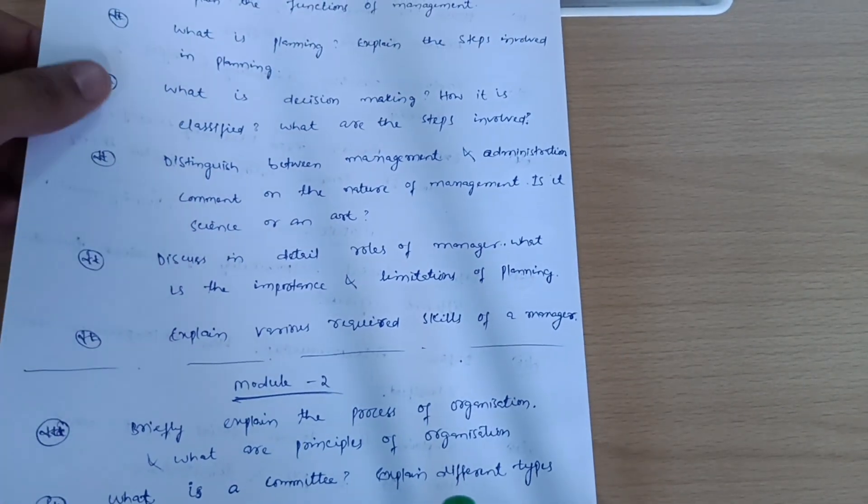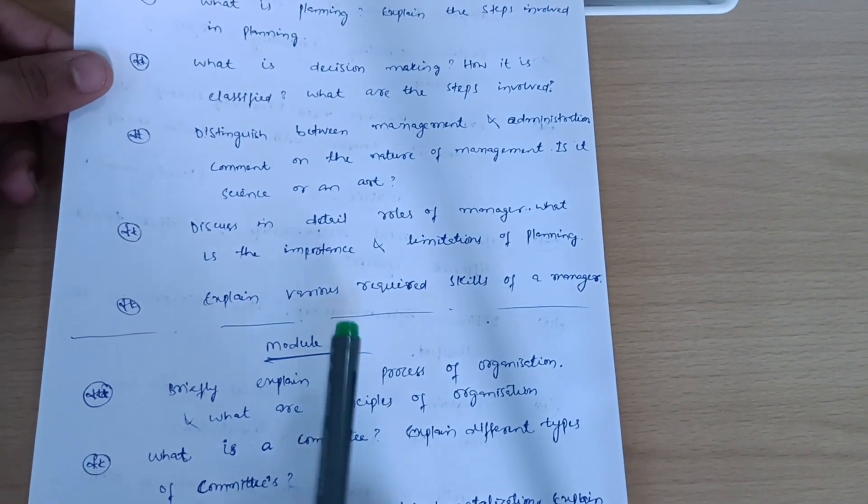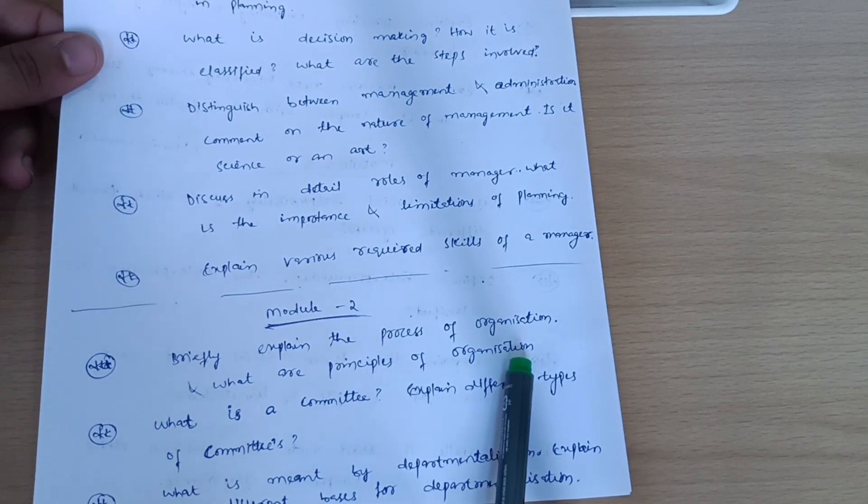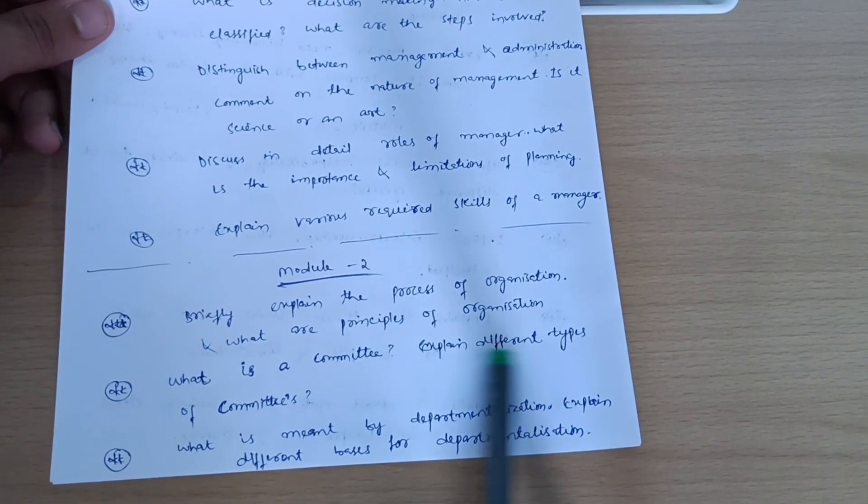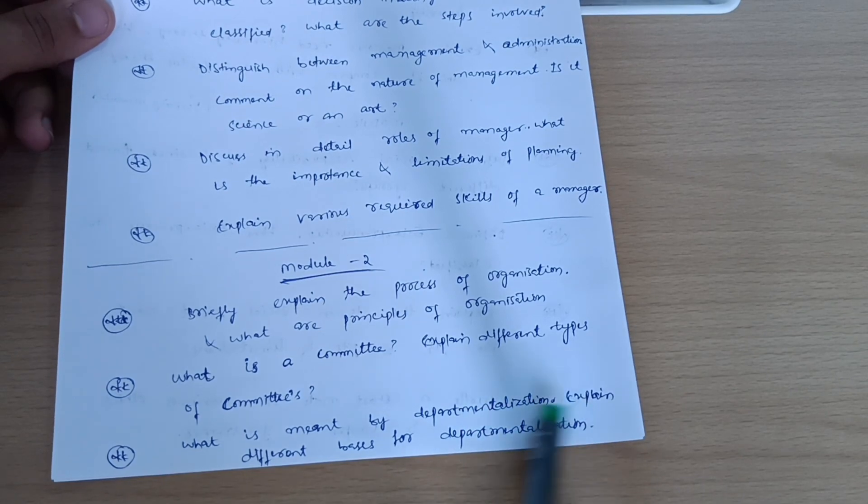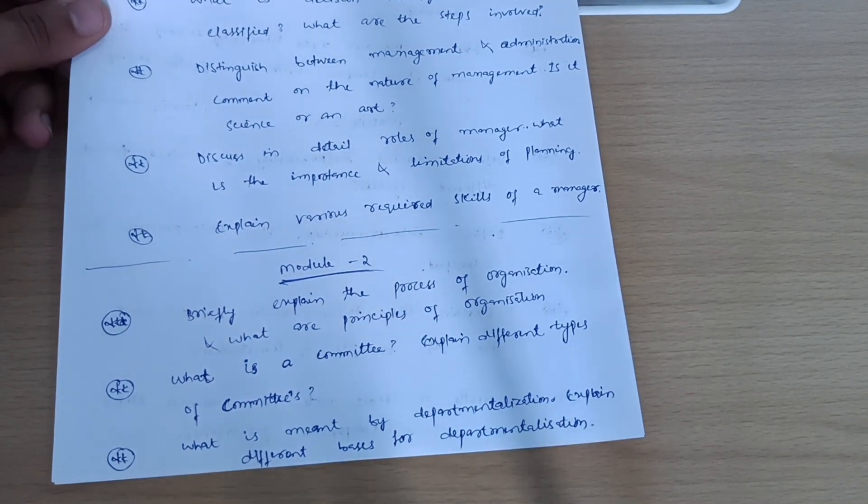These were the passing modules which I discussed already. Next is Module 2: briefly explain the process of organization and what are the principles of organization. What is a committee and explain different types of committees. What is meant by departmentalization? Explain different basis for departmentalization.